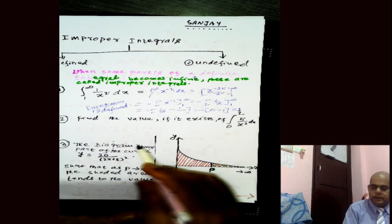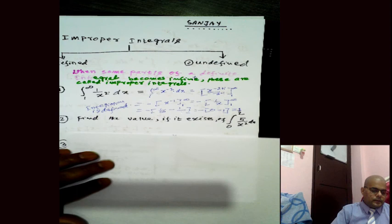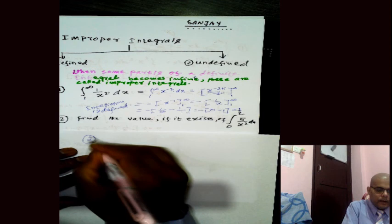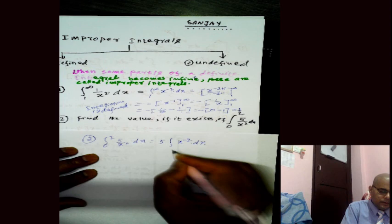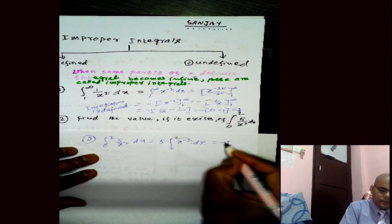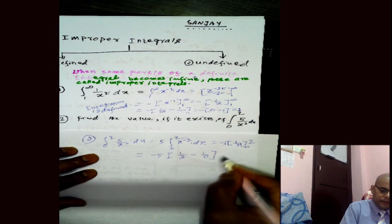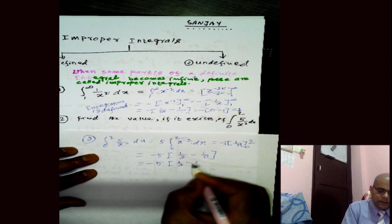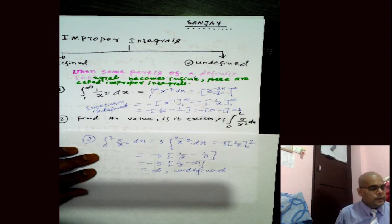Now let's find the value, if it exists, of the next integration. In question 2, the integration is ∫(5/x²)dx from 0 to 2. Writing 5/x² as 5x^(minus 2), we integrate to get minus 5 times 1/x, evaluated from 0 to 2. Substituting gives minus 5 times (1/2 minus 1/0), which is minus 5 times (1/2 minus infinity), and that equals infinity. So this is undefined.